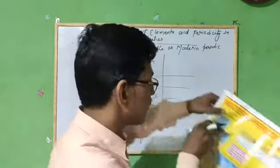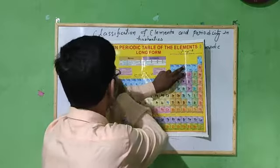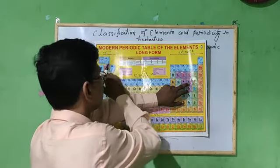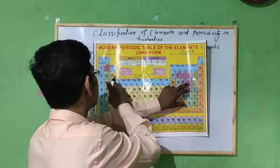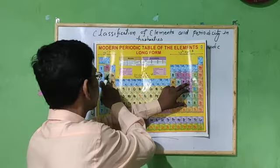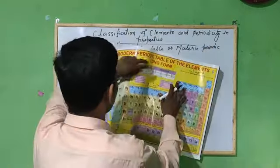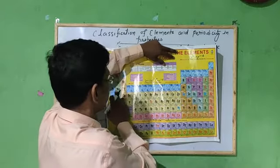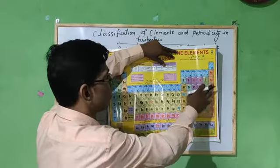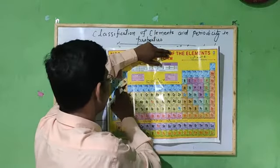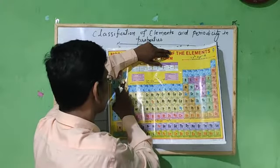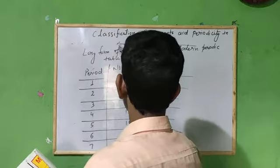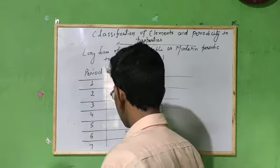Let me explain the magic numbers with an example. Lithium is an element in the second period. Going through the second period — elements 1 through 8 — after the eighth element (neon), sodium comes just below lithium. So lithium and sodium share similar properties because they are in the same group. That is why the counts 2, 8, 8 are called magic numbers — after these numbers, the properties repeat and elements fall in the same group.